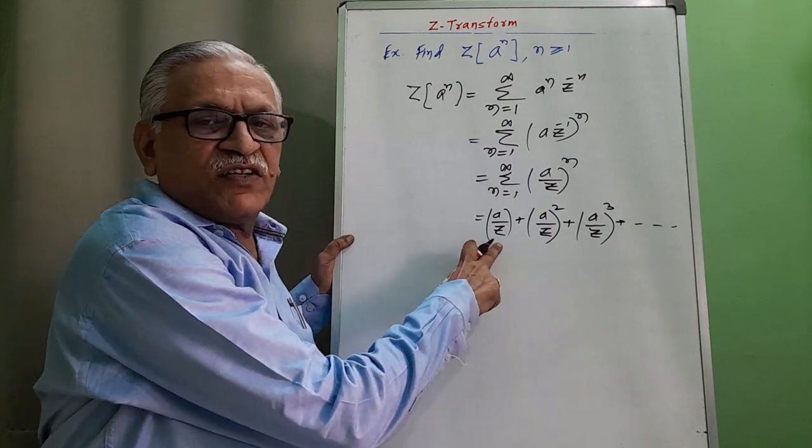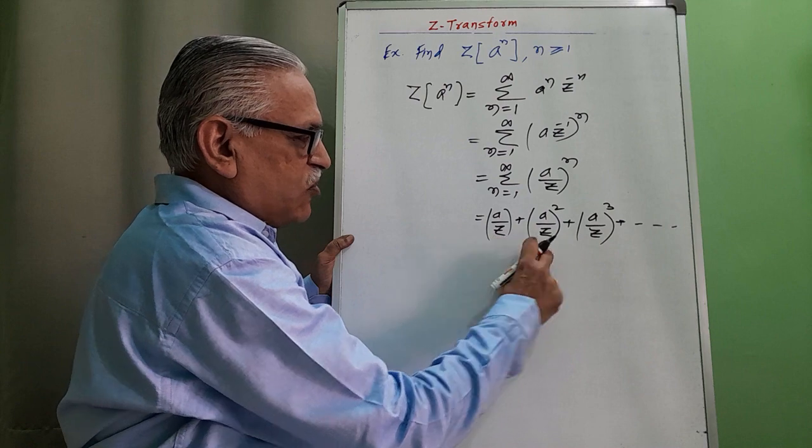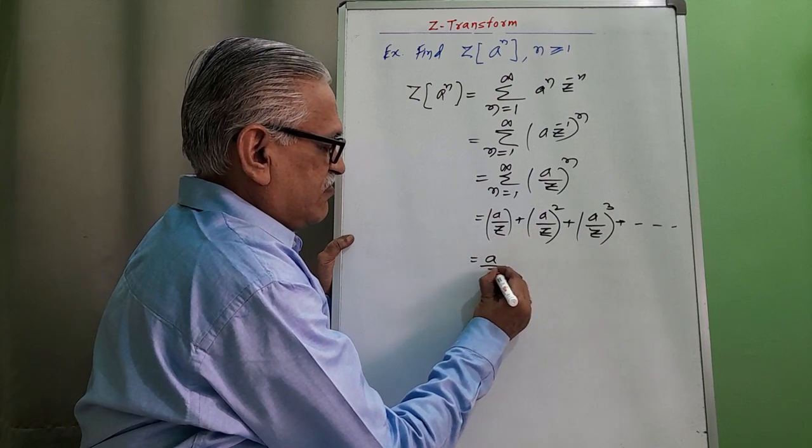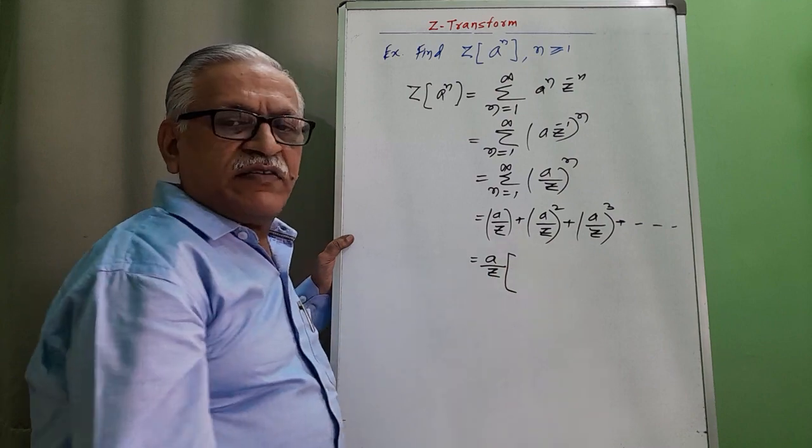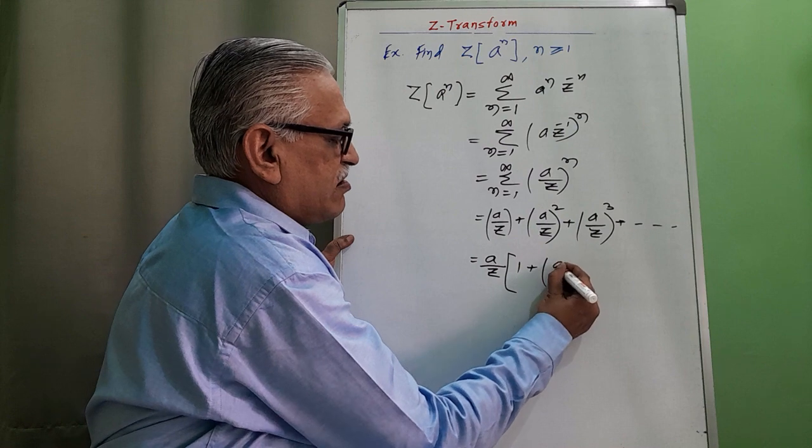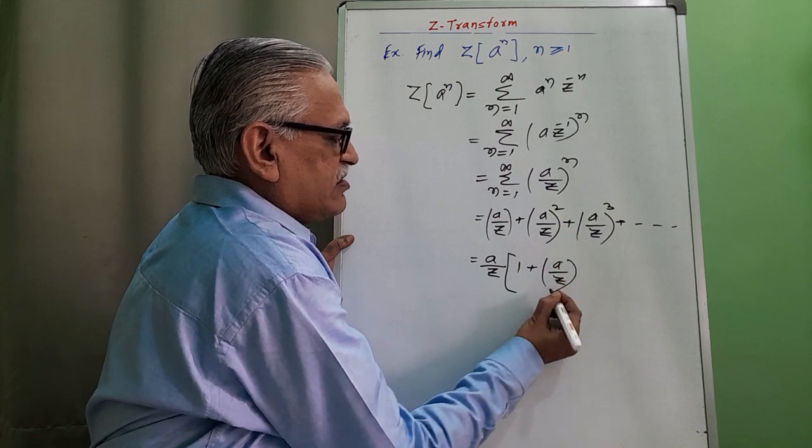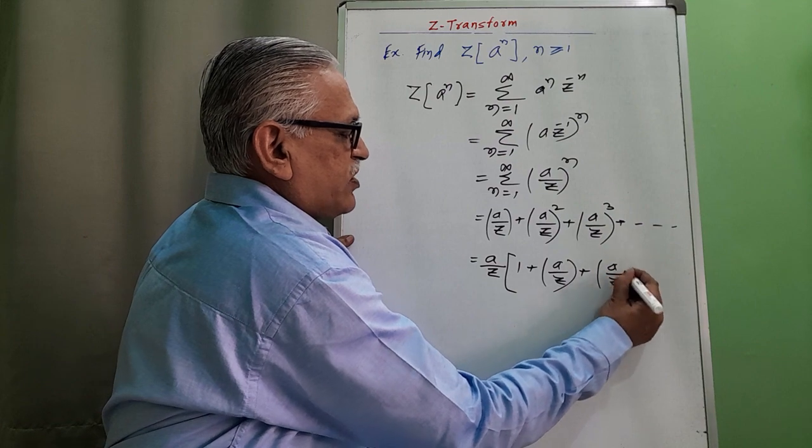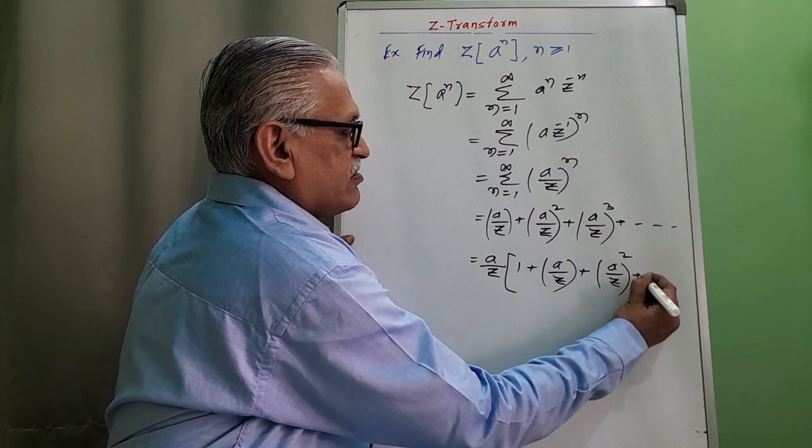Then to have that first term as 1, we take A by Z common from all these. Remaining terms are: here remains 1, next one is A by Z, next one is A by Z whole square and so on.